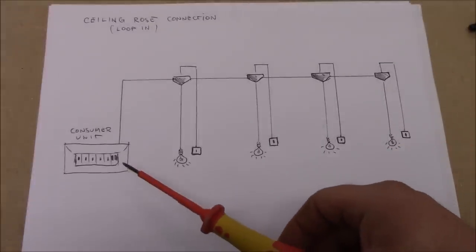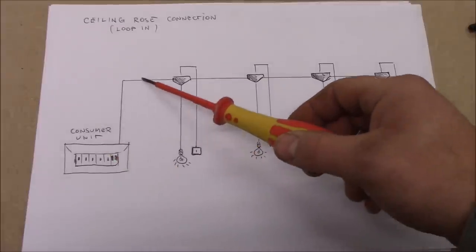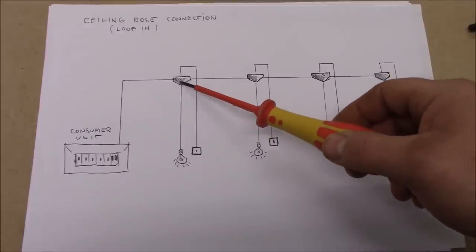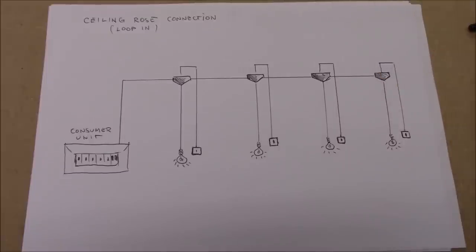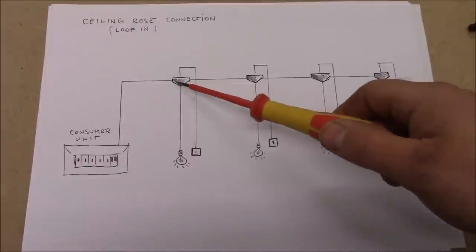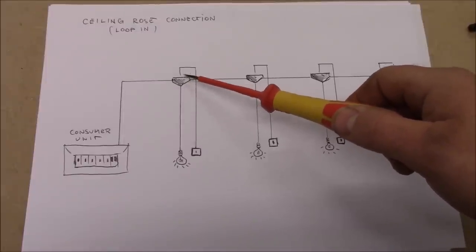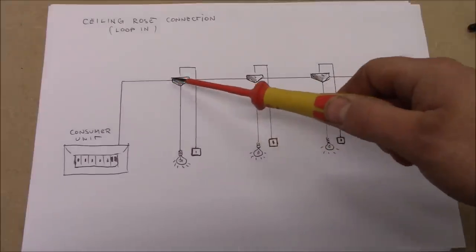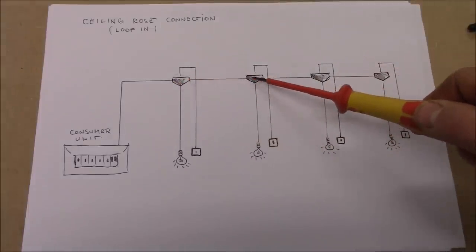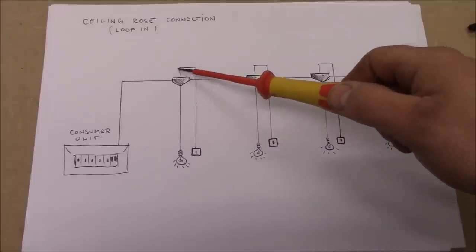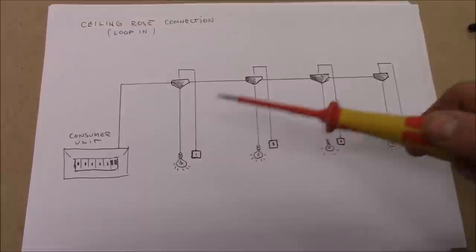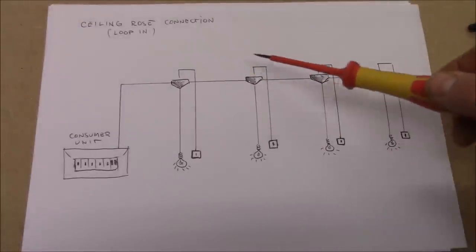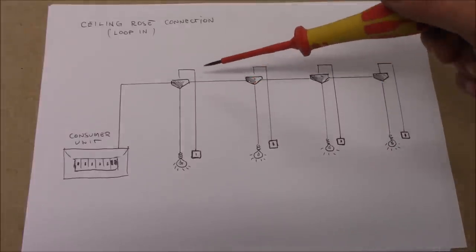Basically, the cable from the consumer unit goes to the first ceiling rose, then from that one to another, then to another, and so on to the end of the circuit. All circuits are radial — starting at the consumer unit and finishing at the last point. In every ceiling rose there are three cables: one coming from the consumer unit or previous light, one going to the next room, and one going to the switch, plus the flex cable going to the light fitting.